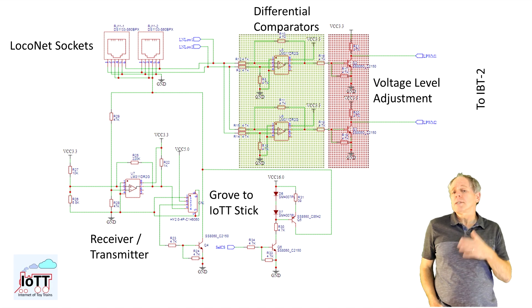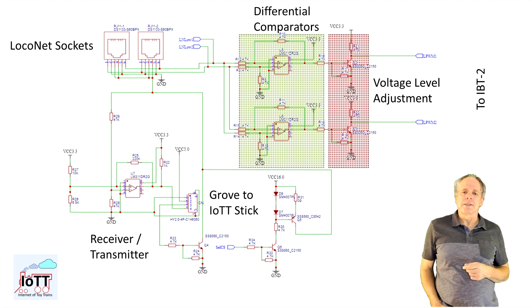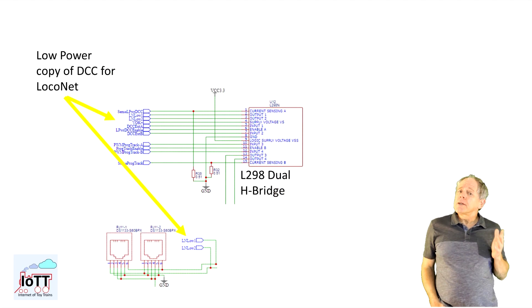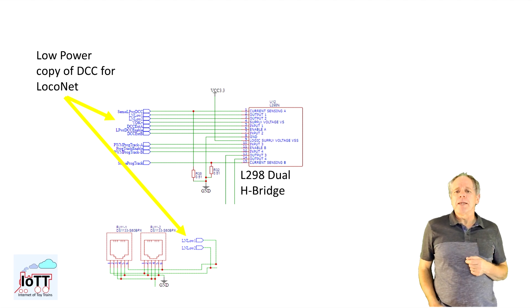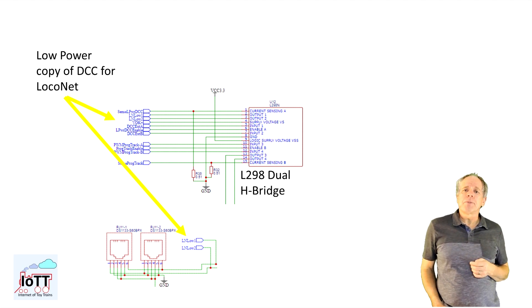In command station mode, the signal ends here and is not used for anything else. In command station mode, the second bridge of the L298 is enabled to amplify the DCC signal generated by the processor so it works in parallel with the IBT2, but of course with much lower current limit. The output of the L298 is then run to wires 1 and 6 of the LocoNet cable, where it can be used to power LocoNet devices like throttles that are connected to the network according to the LocoNet specifications.